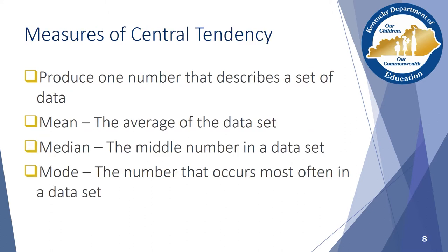The most common set of descriptive statistics are a classification called measures of central tendency. These measures produce a single number that describes a data set. There are three primary measures of central tendency: mean, median, and mode. The mean represents the average of a set of scores, or the sum of the scores divided by the number of scores. The mean is a valuable measure that tells us generally how well a group of students performed on an assessment, or how well a single student performed on a group of assessments. The mean is the formula used by most educators to calculate grades at the end of the term.